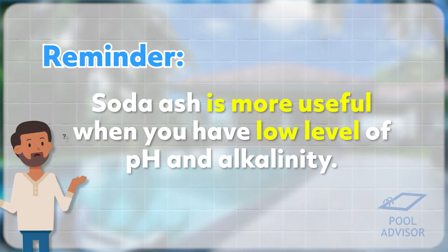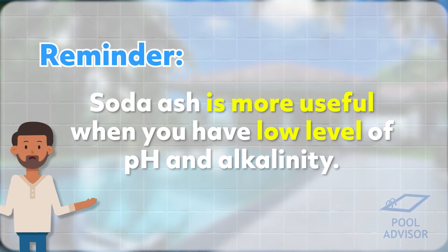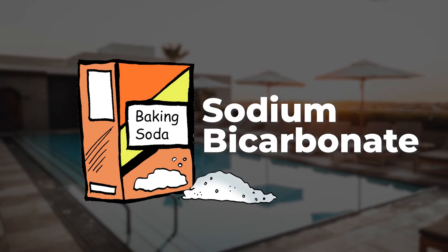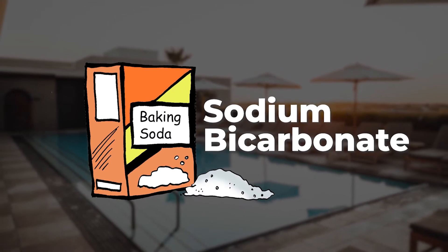You'll see a nice boost in alkalinity, but you'll also see a big increase in pH as well. If you're not careful, you can overshoot your pH and have it way above the recommended level. It's really a useful chemical if your pH and alkalinity are both quite low. If your pH is already basically where it should be or just slightly too low, I would actually consider using baking soda — sodium bicarbonate — rather than soda ash.